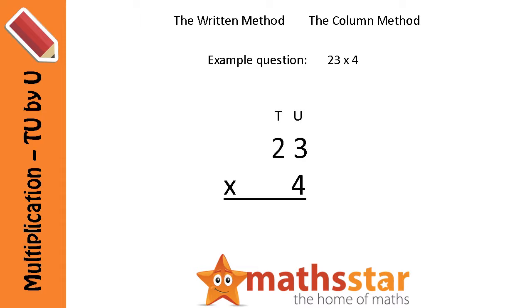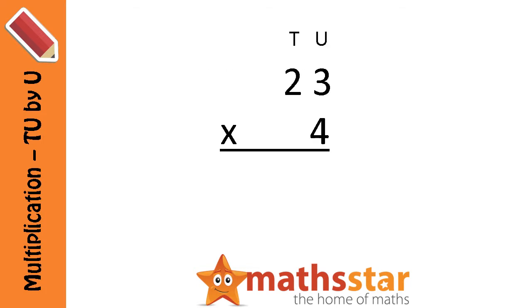We lay the question out like this, so we always have the smaller number on the bottom. And we're going to work from right to left, so we'll start by multiplying the units column, and then we'll multiply the tens column. So let's start.